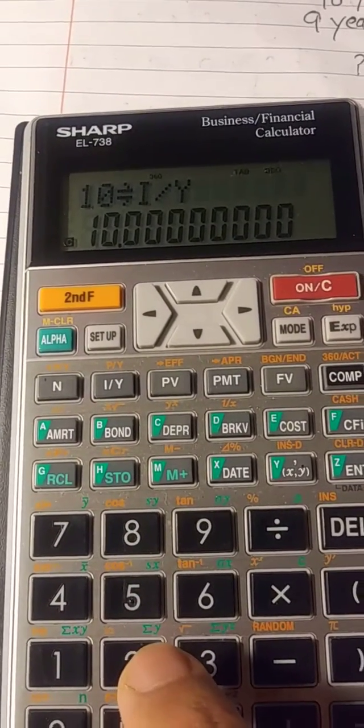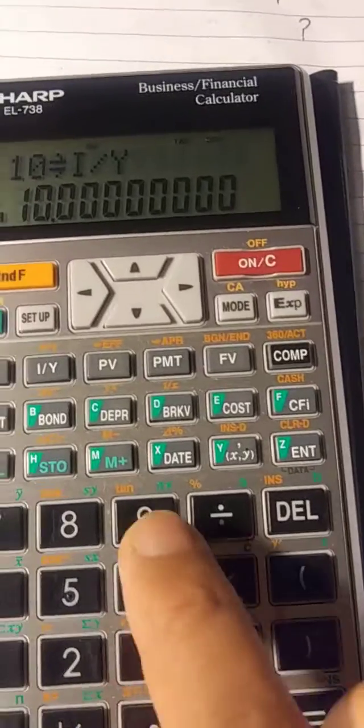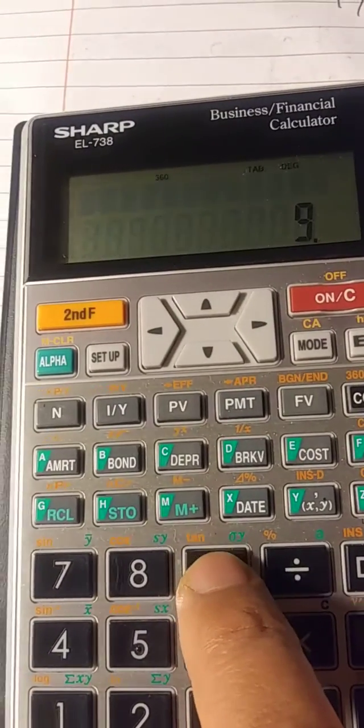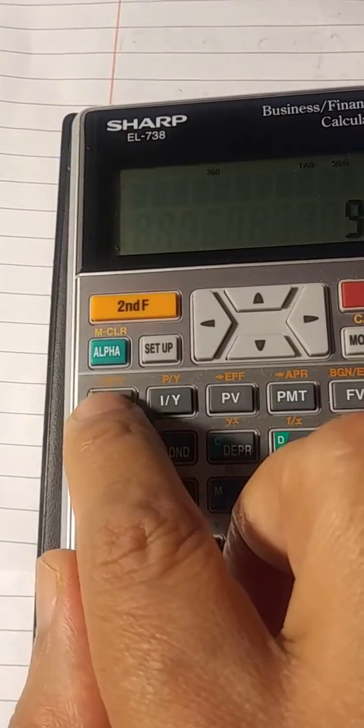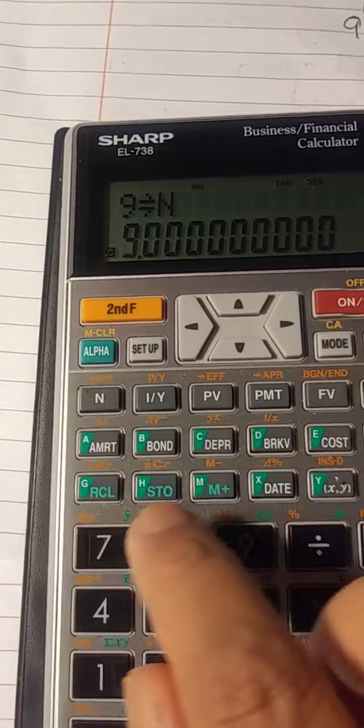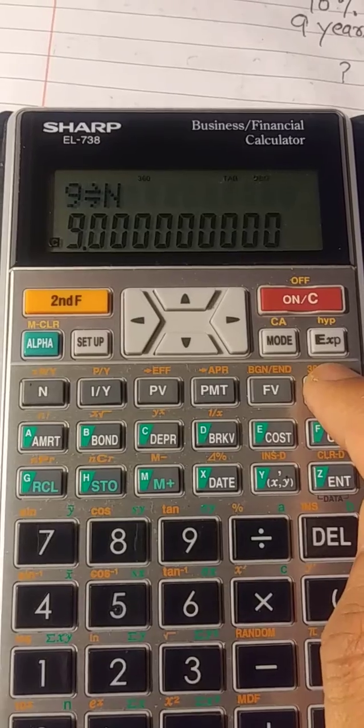Then we have time, that is nine years. So here is nine, and time means press button N, right.